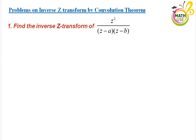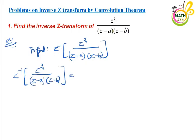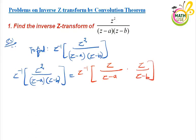The question is: find the inverse Z transform of z squared divided by z minus a times z minus b. So we have to find Z-inverse of z squared divided by z minus a times z minus b. We can express this as Z-inverse of z over z minus a times z over z minus b. Now just recall the inverse Z transform convolution theorem.